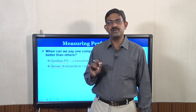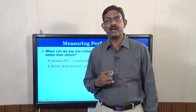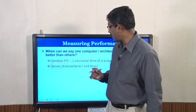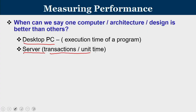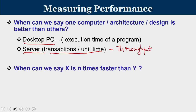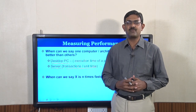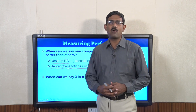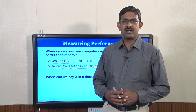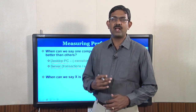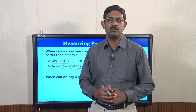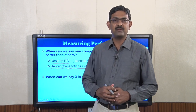For machines like servers, it is not just the execution time of a single program that matters — we are getting different requests from different machines and need to know how fast we can provide service. In this context, transactions per unit time that a server can do, also known as throughput, is the relevant metric. For common desktop PCs, execution time is the more predominant performance metric, whereas for servers, the number of transactions completed per unit time makes more sense.